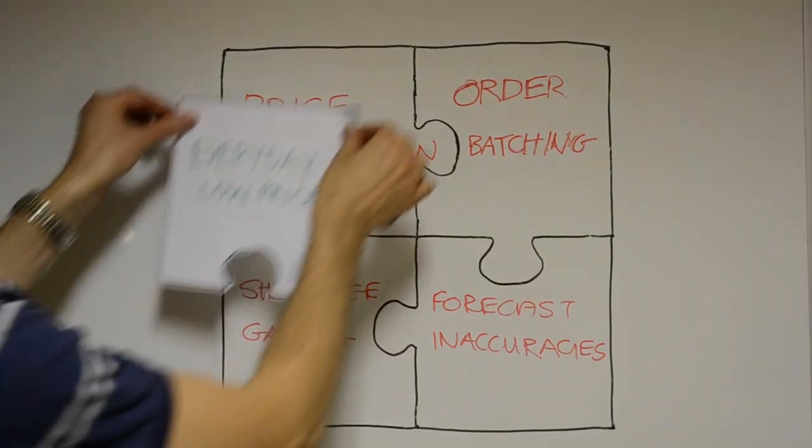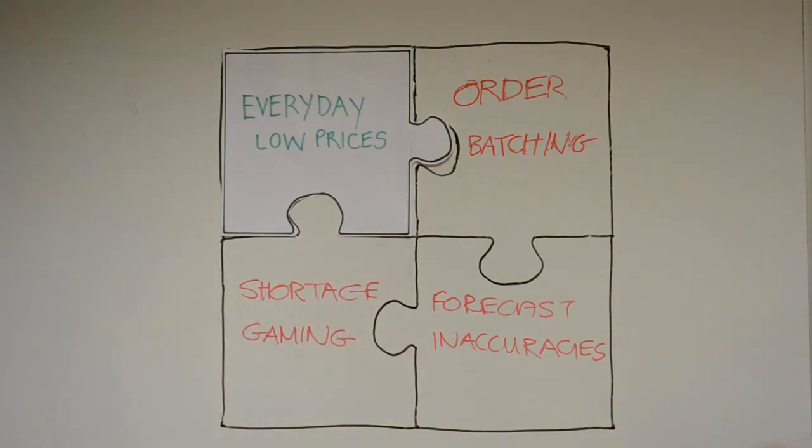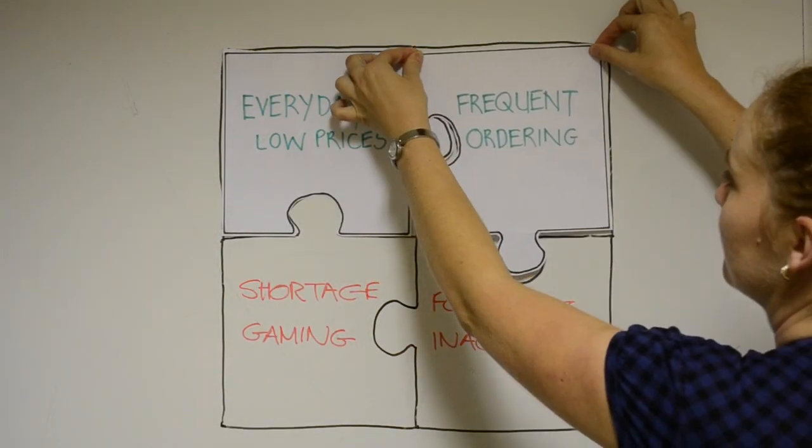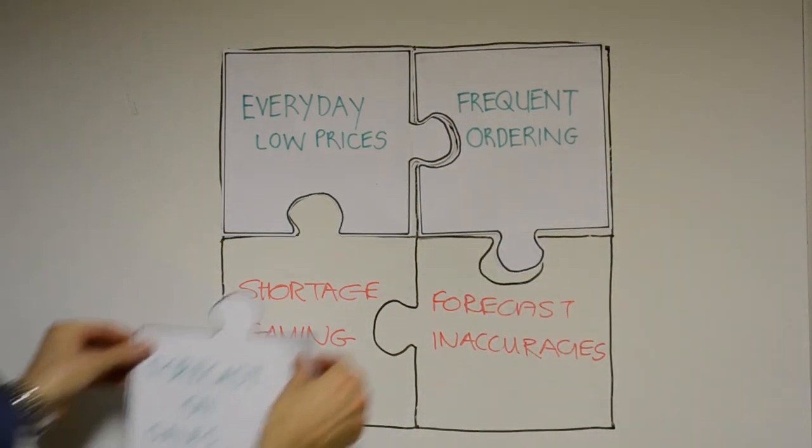Countermeasures to fluctuating prices: fluctuating prices can be replaced with everyday low prices. Countermeasures to order batching: more frequent ordering results in smaller orders and smaller variants.